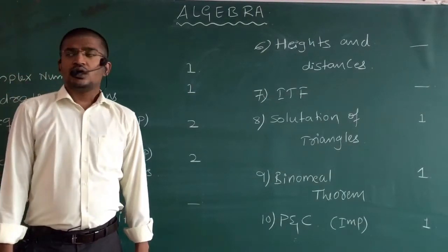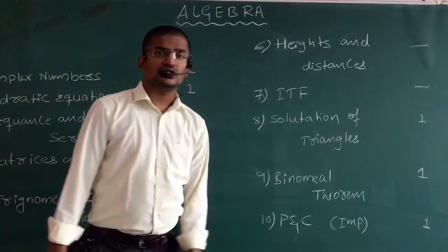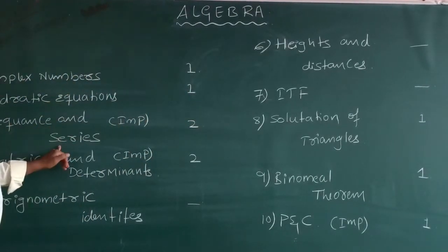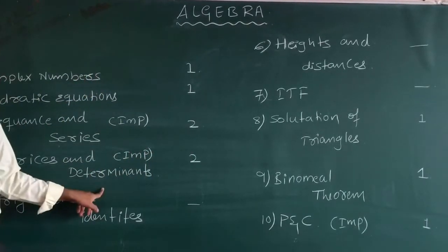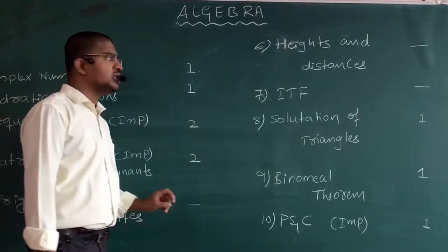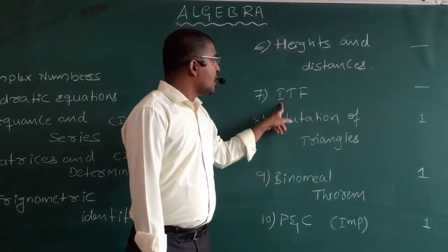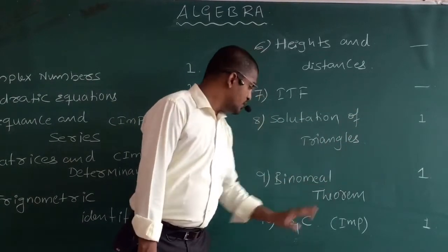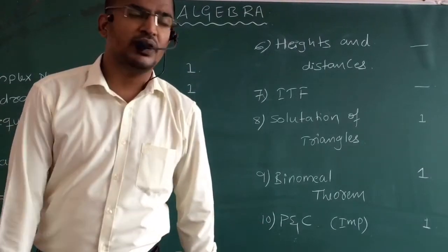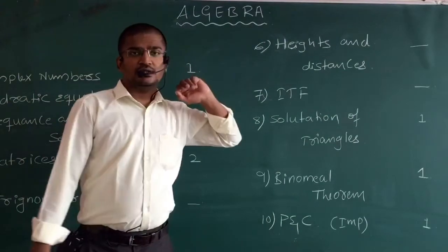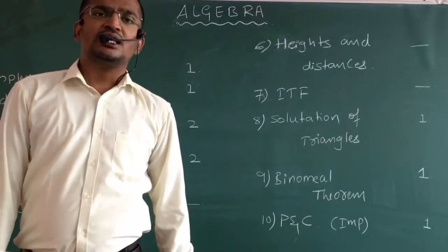Now, let's look at Mathematics. In algebra, they asked a total of 10 questions. From complex numbers: 1 question. Quadratic equations: 1 question. Sequence and series: 2 questions. Matrices and determinants: 2 questions. Trigonometric identities: 0 questions this time. Heights and distances: 0 questions. Inverse trig functions: 0 questions. Solution of triangle: 1 question. Binomial theorem: 1 question. Permutation and combination: 1 question. So totally 9 questions from algebra, giving 9 × 4 = 36 marks if all correct.